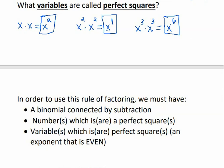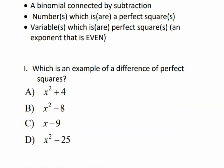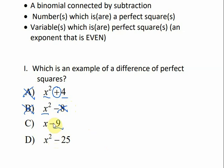In order to use this factoring rule, we have to have a binomial connected by subtraction, with numbers and variables that are perfect squares. Let's see if you can determine what is an example of a difference of perfect squares. Option A has two perfect squares but it's not a difference, so no. Option B is a perfect square and is a difference, but the second term is not a perfect square. Option C has 9, which is a perfect square, and it's a difference, but the other term is not a perfect square. Option D has a perfect square, it's a difference, and the other term is a perfect square — so yes, that is a difference of perfect squares.